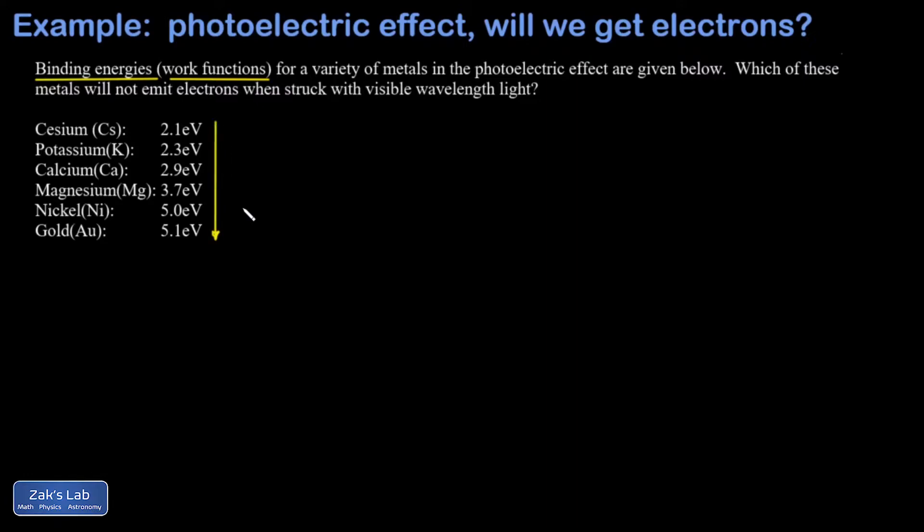We're asked which of these metals will not emit electrons when struck with visible wavelength light.